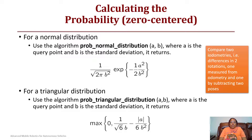For a zero-centered probability model, the normal distribution function takes parameters a and b, where a is the query point or mean and b is the standard deviation, and returns one over the square root of two b squared times e to the negative a squared over two b squared. For the triangular distribution, you also pass in a and b, and it returns the maximum of zero or one over the square root of six b minus the magnitude of a, over six b squared. To find these probabilities, we compare two odometries — one measured from the odometry and the other from subtracting the two poses.